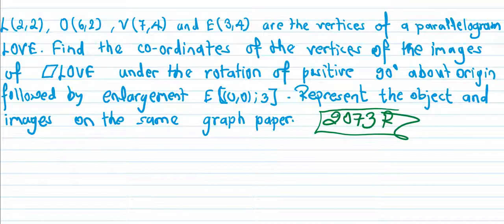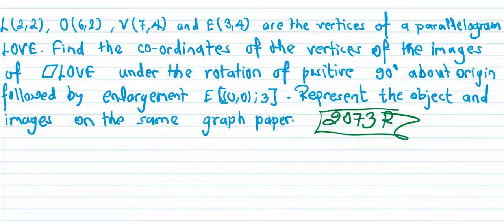You want to have a new time. L one neck vertex — given time in A: two comma two, O: six comma two, V: seven comma four, and E: three comma four are the vertices of a parallelogram L-O-V-E. Find the coordinates of the vertices of the images of parallelogram LOVE. So find the image coordinates.